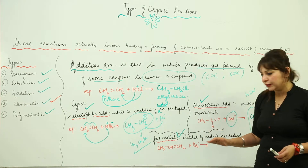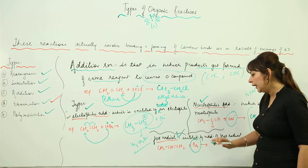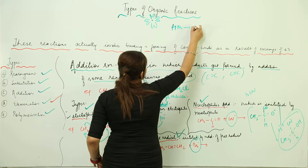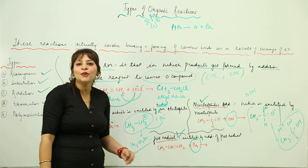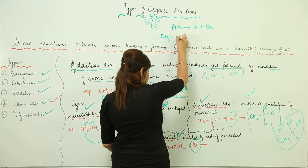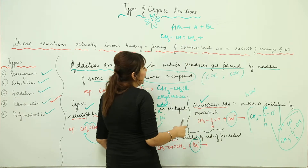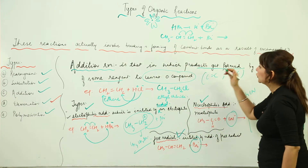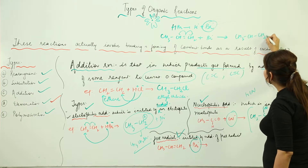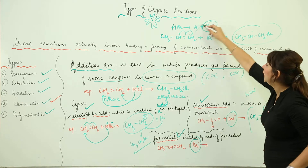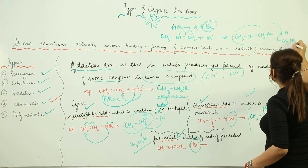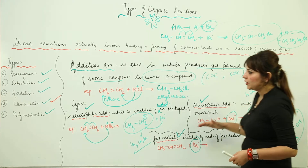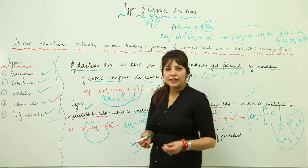If the addition is initiated by a free radical, it is called free radical addition. Take HBr: it undergoes homolytic fission forming free radicals. With the compound CH3CH=CH2, initiated by Br dot free radical, it will share electrons equally. This forms a carbon free radical, which then reacts with another free radical H, resulting in the formation of CH3CH2CH2Br — that is propyl bromide or bromopropane.